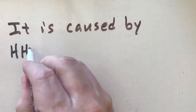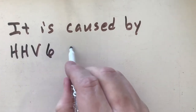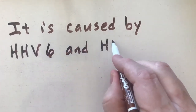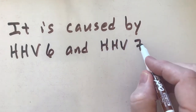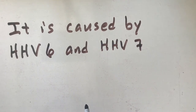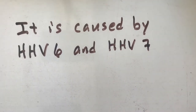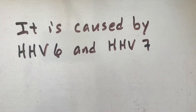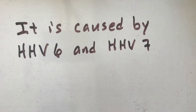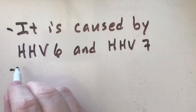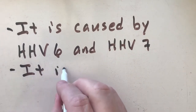It's caused by HHV — human herpes virus 6 and human herpes virus 7. To recap: we had HSV-1, which was oral herpes; HSV-2, which was sexually transmitted herpes; HHV-3, varicella zoster, which was chickenpox; HHV-4, Epstein-Barr virus; HHV-5, cytomegalovirus; and now HHV-6 and HHV-7, which cause roseola. This virus is present in most people's saliva.